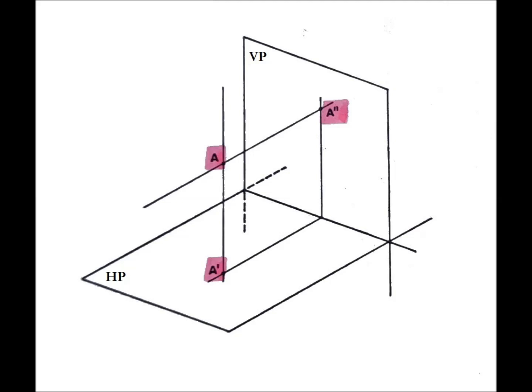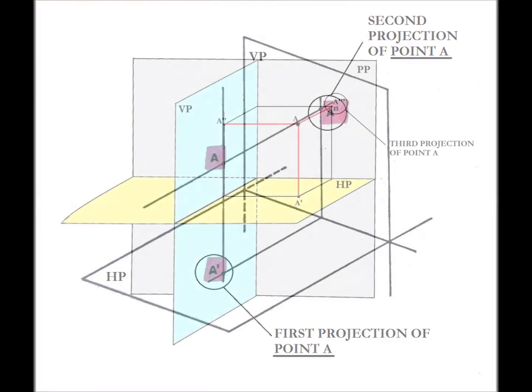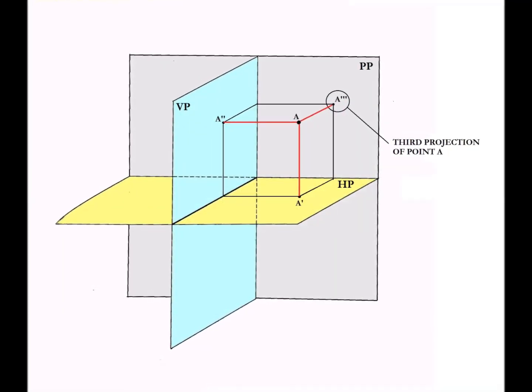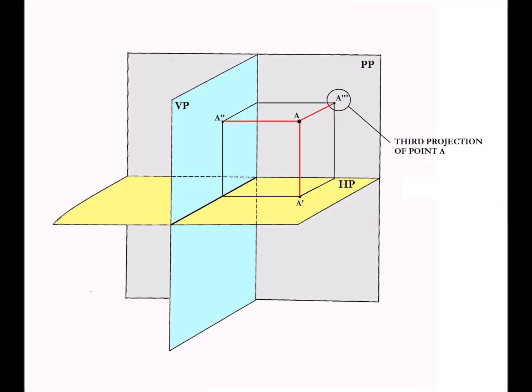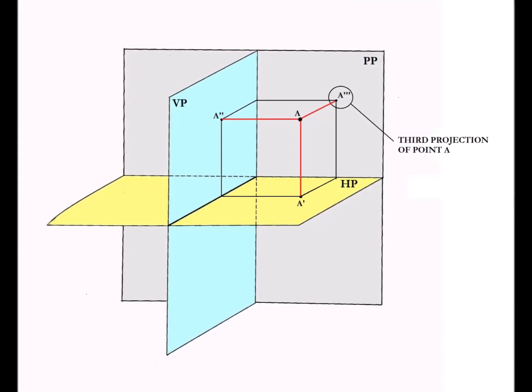The orthographic projection on the horizontal plane is called first projection, and is indicated with the symbol first. The orthographic projection on the vertical plane is called second projection, and is indicated with the symbol second. The orthographic projection on the profile plane, although we haven't talked about it yet, is called third projection, and is indicated with the symbol third.